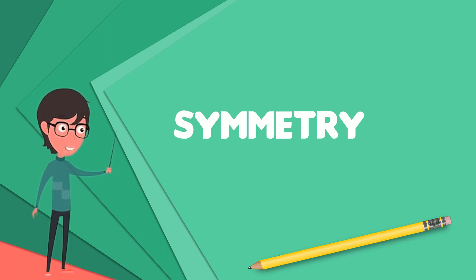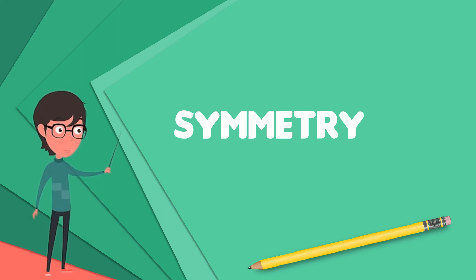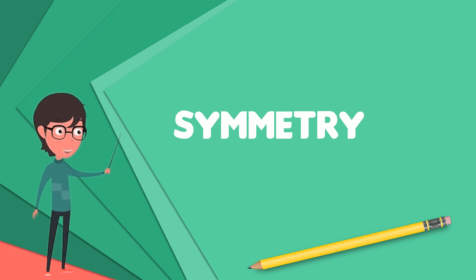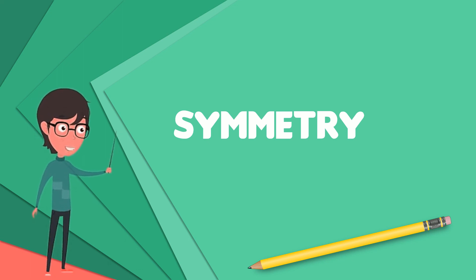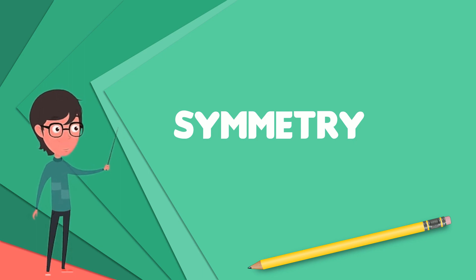in mathematics, including geometry, the most familiar type of symmetry for many people, in science and nature, and in the arts, covering architecture, art and music. The opposite of symmetry is asymmetry.